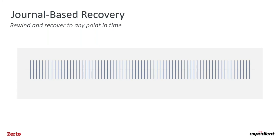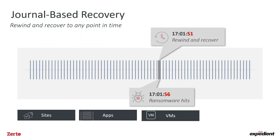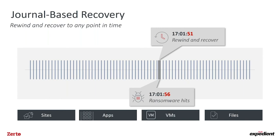The checkpoint-every-five-seconds approach enables very granular recovery — especially powerful for ransomware. It's not if but when. If ransomware hits at 5 PM, I don't want to recover encrypted data, so I simply select a point in time five seconds before the encryption started and recover that data unencrypted. I can do this for an entire data center, a specific application, specific VMs, or even individual files — going back up to 30 days using flexible journal-based recovery.